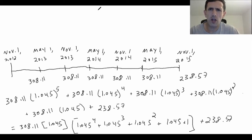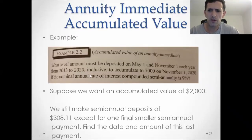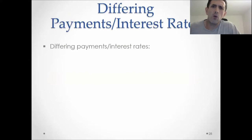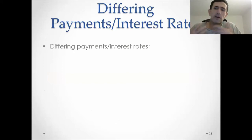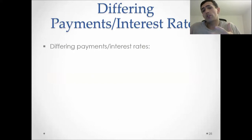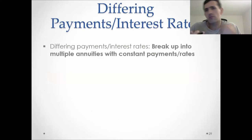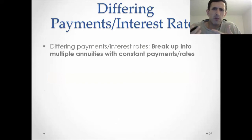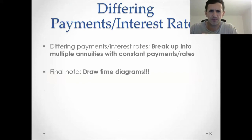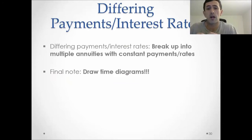Let's move on. What happens when you have an annuity immediate — or just an annuity in general — where payments aren't exactly constant, or interest rates aren't exactly constant? To use our formulas, you really have no choice but to break these annuities up into multiple annuities, each of which has a constant payment amount and a constant interest rate. Drawing time diagrams really makes these problems a lot easier.